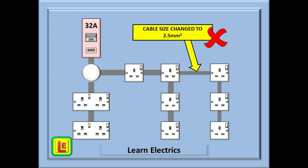Now we have a similar 32 amp circuit, again wired in 4 millimetre twin and earth for the most part — except that the three sockets on the right are all wired in 2.5 millimetre cable. This leg will only take 27 amps before the cable begins to overheat and suffer damage, since the breaker will not operate until more than 32 amps flows. This part of the circuit is not correctly installed and it is essential that we do something about it.